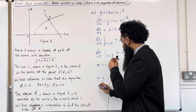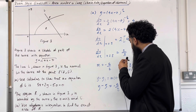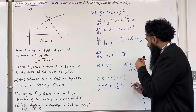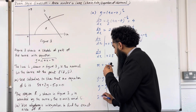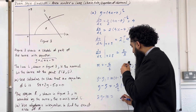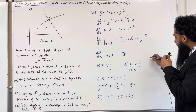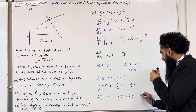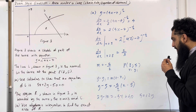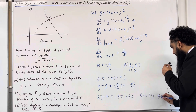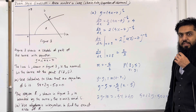Substituting the values in: y minus 5 equals minus 5 over 2 times (x minus 8). Multiplying the entire equation by 2 gives 2y minus 10 equals minus 5x plus 40. Taking everything to the left-hand side gives 5x plus 2y minus 50 equals 0, as required. This completes part A.